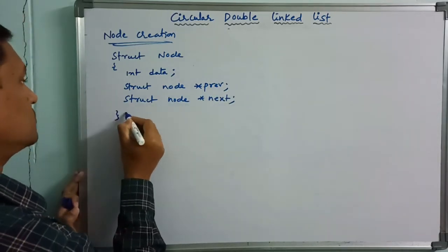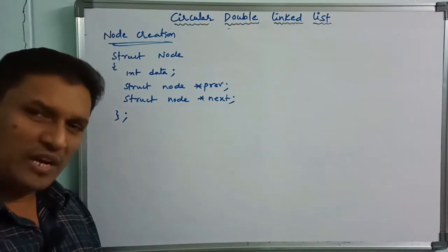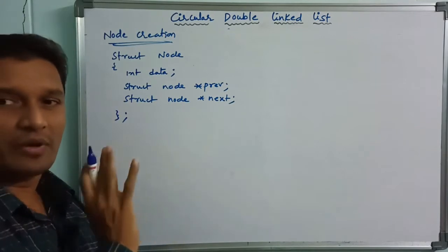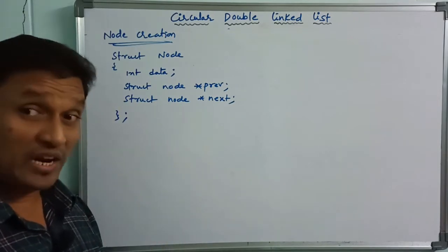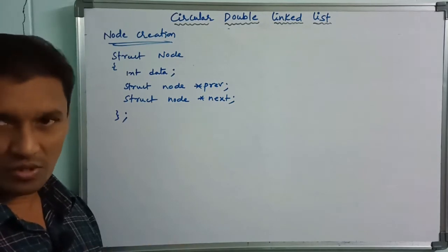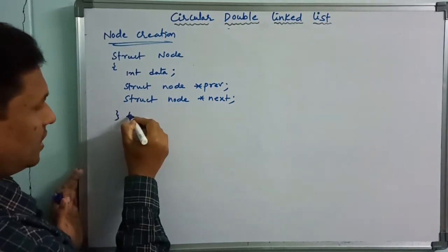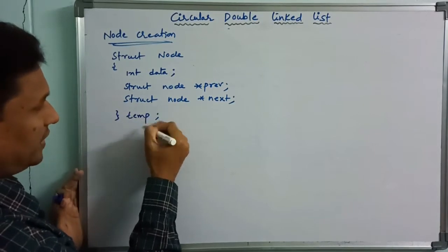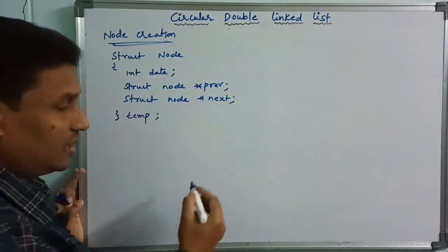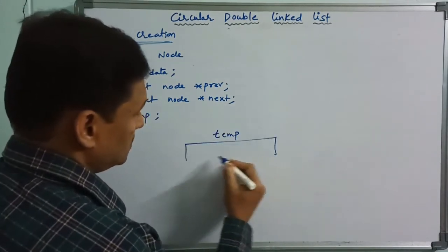And struct node star next. We have node creation for the double circular linked list. We need the node structure because we are creating a code structure. We have created a variable of type node — a structure type variable.